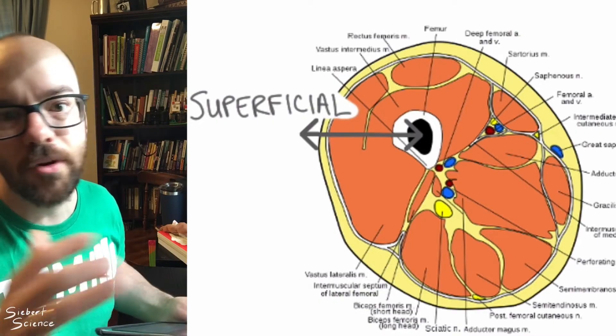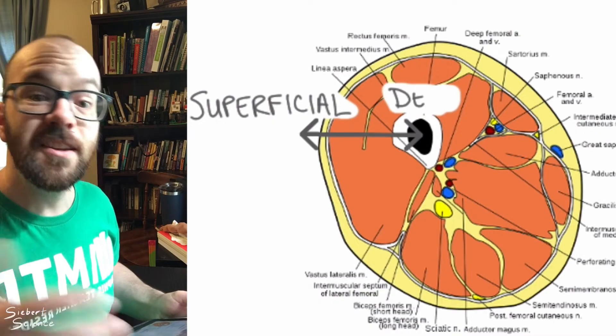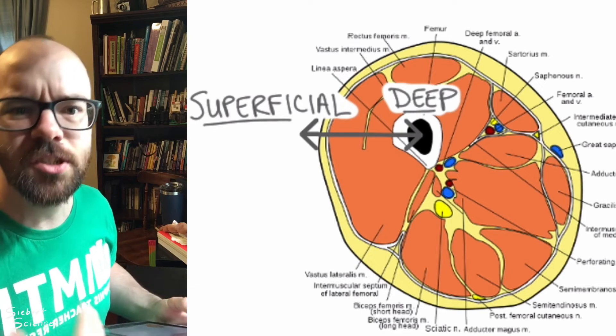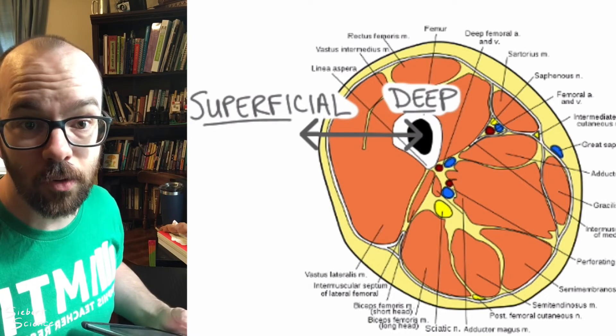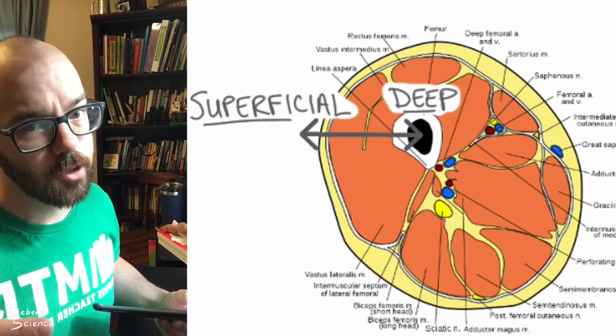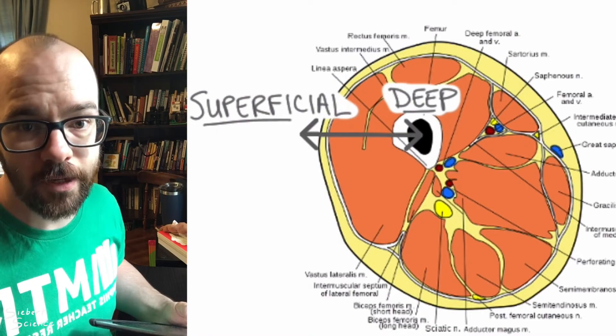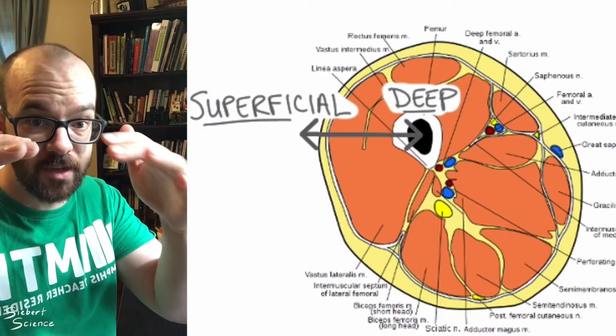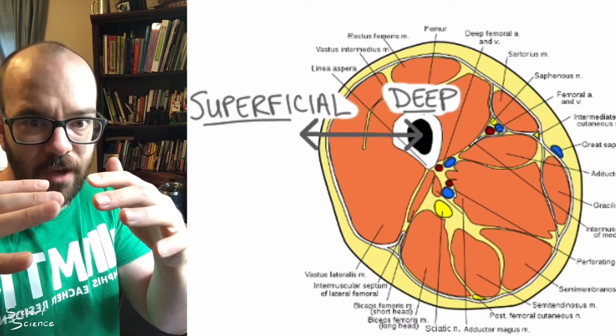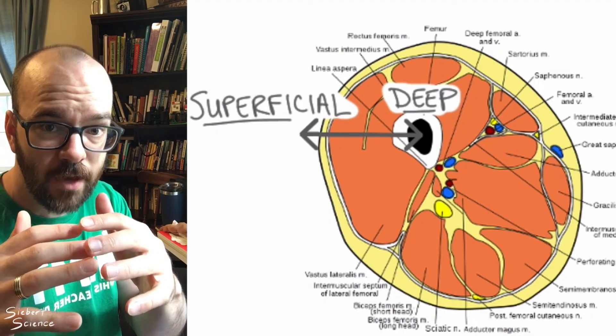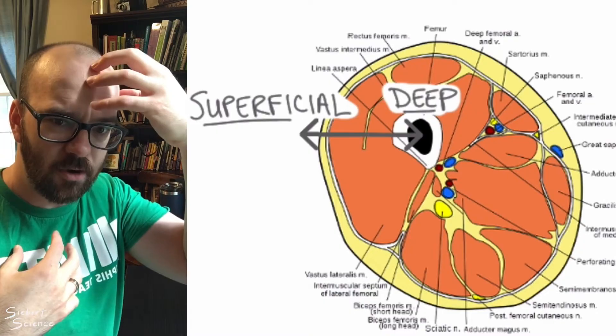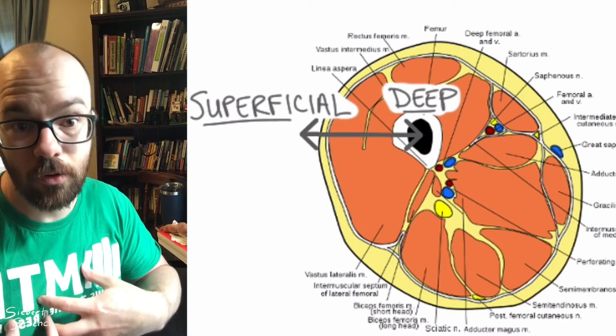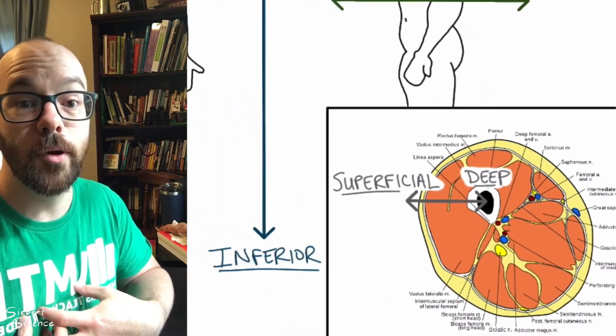So your skin, for example, is going to be the most superficial part of your body. And then deep would be the most inside part, which is usually going to be the bones or sometimes the internal organs. So we only really use these two terms, superficial and deep, when we're talking about layers. And usually those layers kind of go in this order from superficial to deep. We've got the skin, we've got the hypodermis, which is the fat layer. We've got muscle inside of that and then bone. And then if it's like in our skull or in our chest cavity, then it's going to be the internal organs that are deep to those bones.